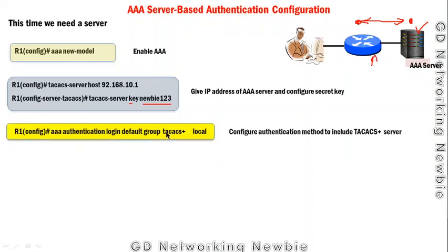The third command is `aaa authentication login` followed by the list name, using `group tacacs+` and then `local`. This means the router first checks with the TACACS+ server, and if that fails it falls back to the local database. This completes the set of commands to configure server-based authentication methods.